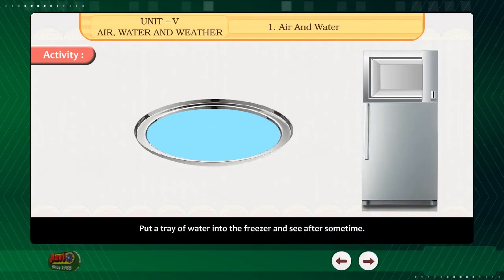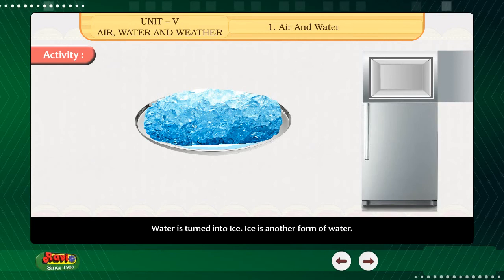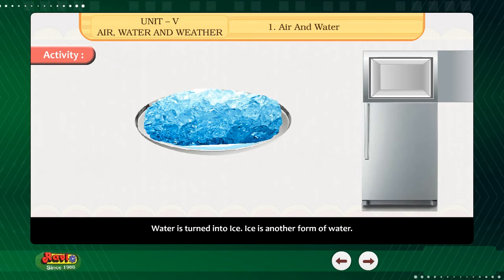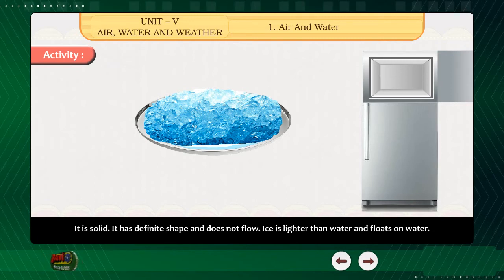Activity — Put a tray of water into the freezer and see after some time. Water is turned into ice. Ice is another form of water. It is solid — it has a definite shape and does not flow.